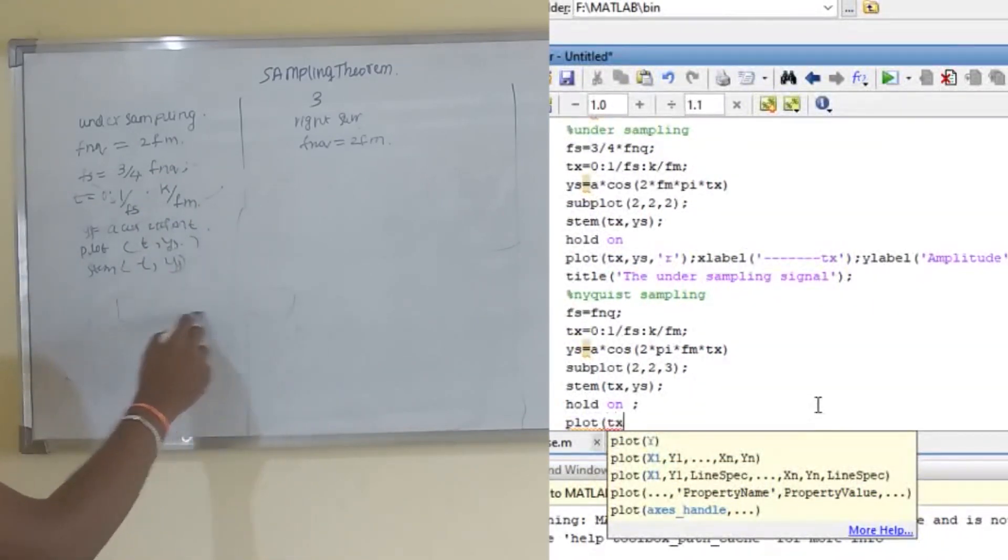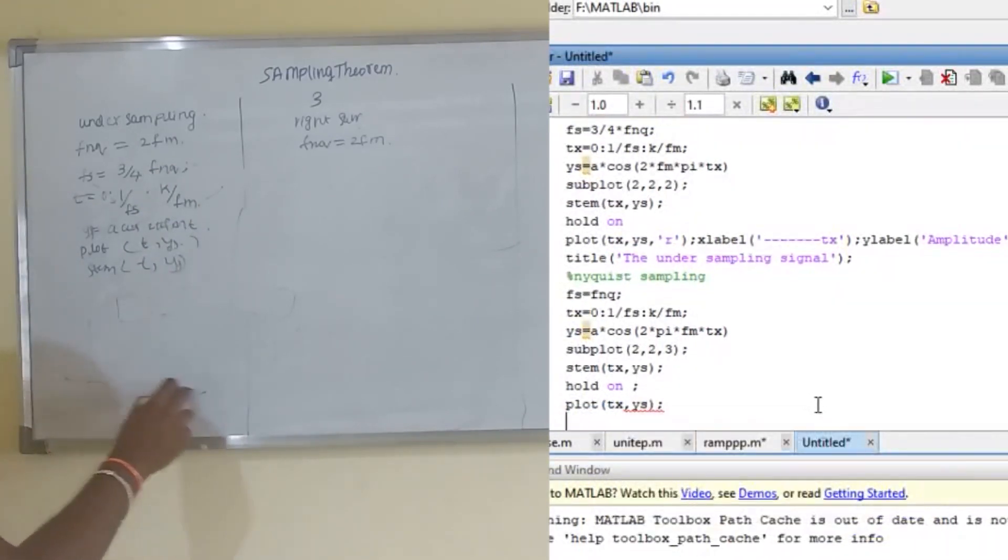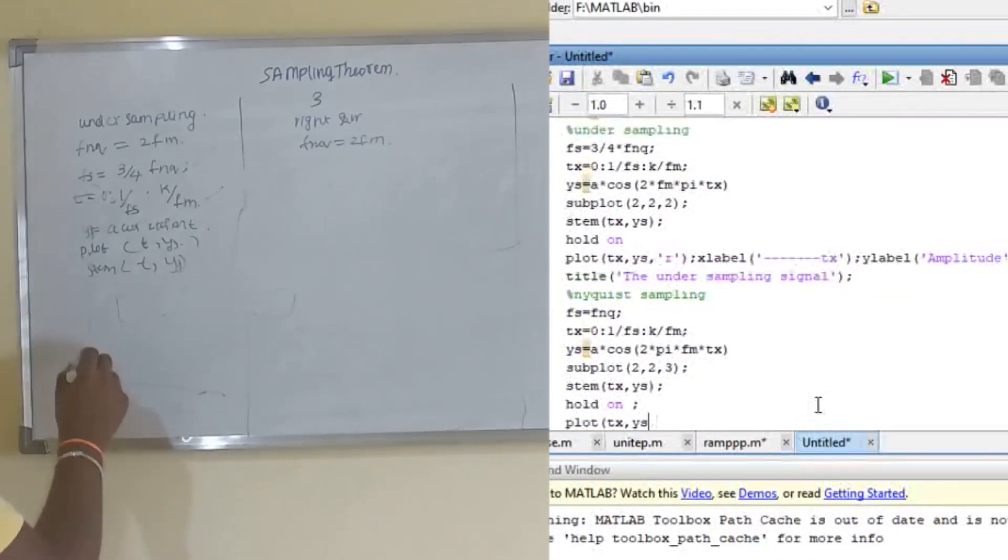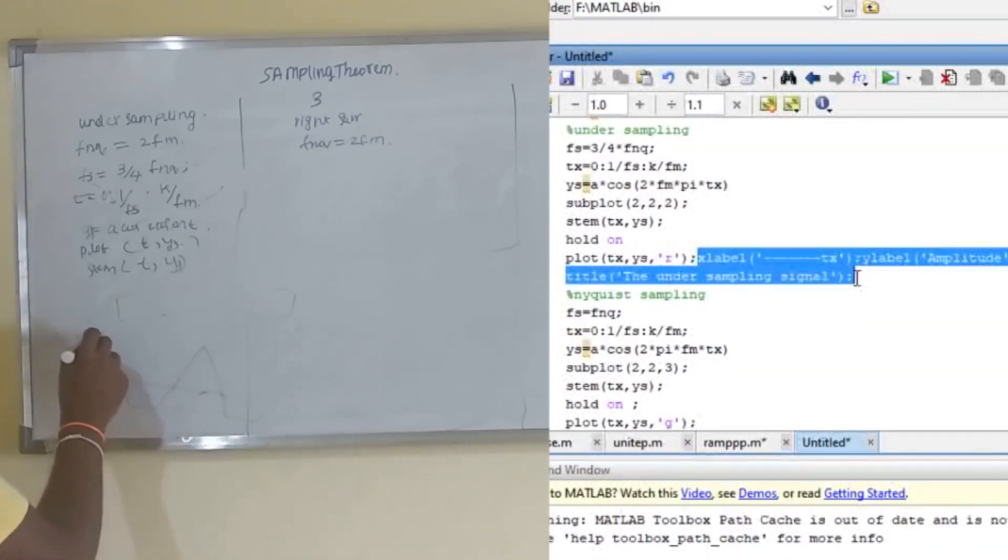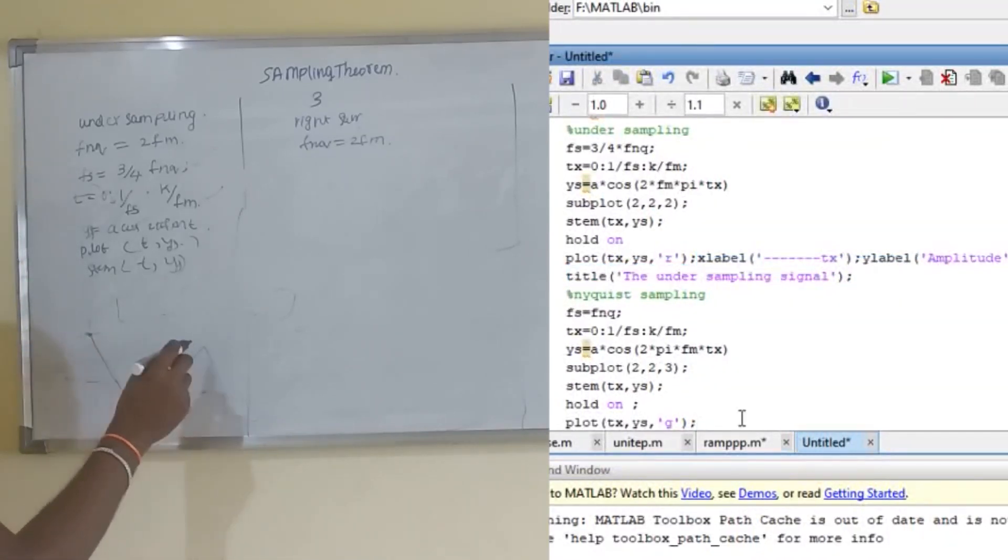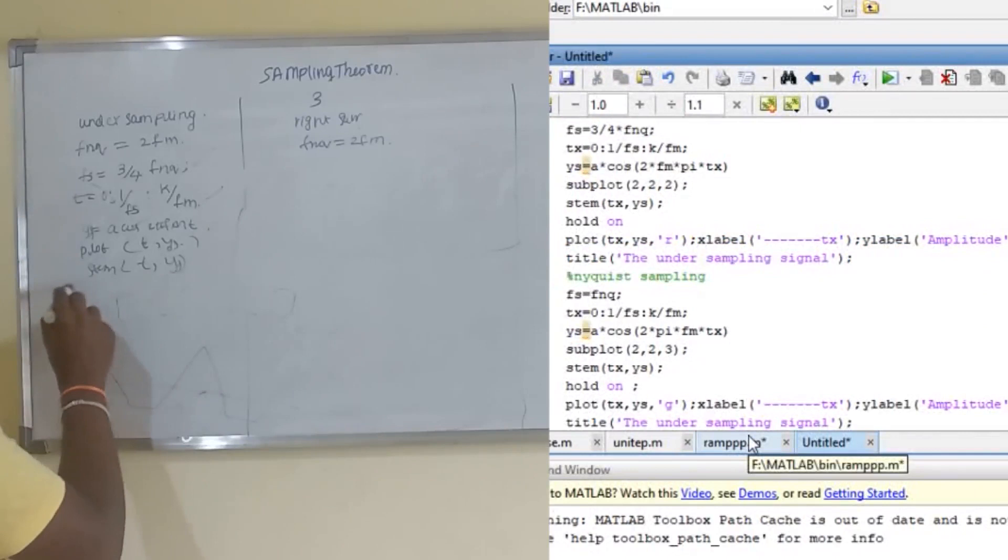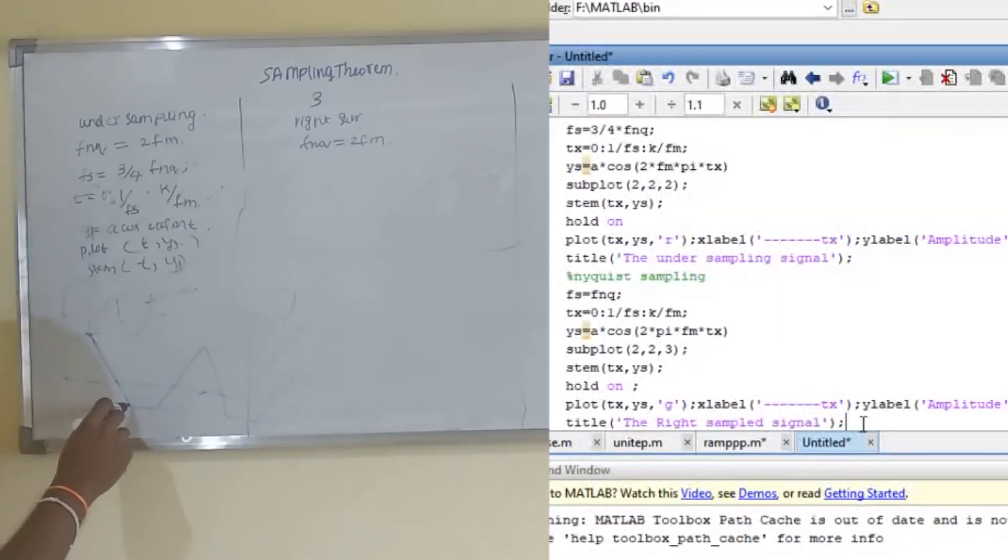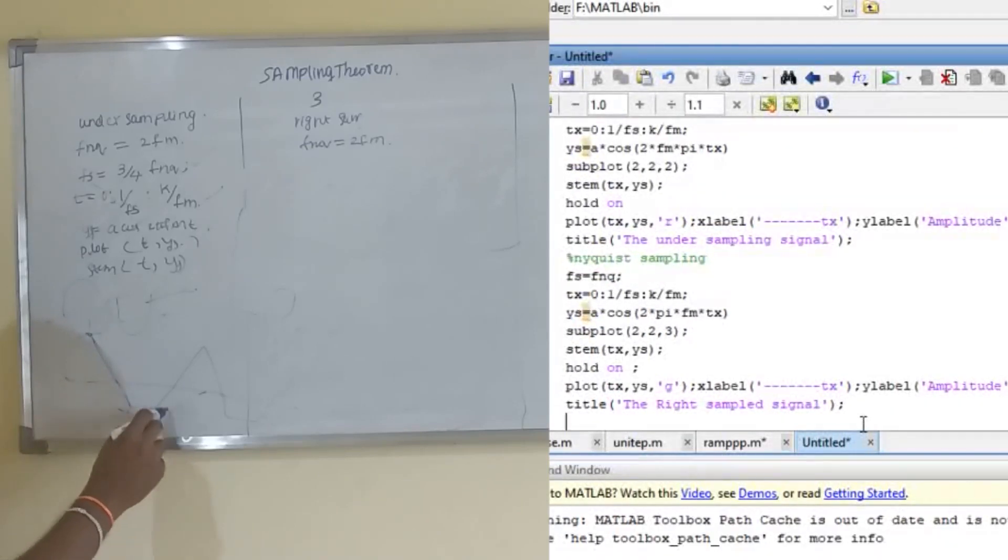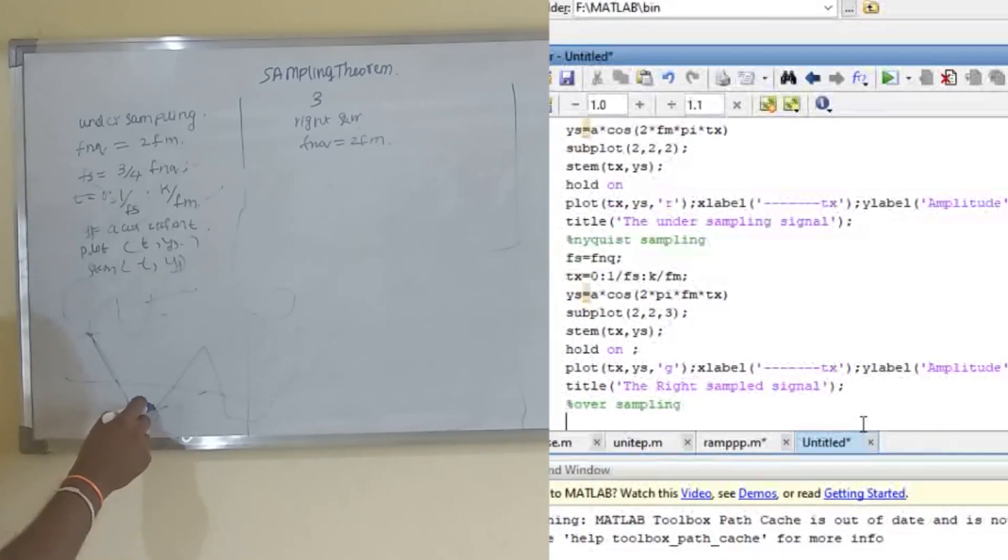After doing plot, we will calculate the value of Ys. Ys will be a matrix. If we plot by using MATLAB, we will get a wave something like this. Here it is sampled rightly for an input signal. This is an input signal. While sampling, this signal will be lost. Only these points we will get by using this calculation. This is considered as an undersampling case, under modulation.